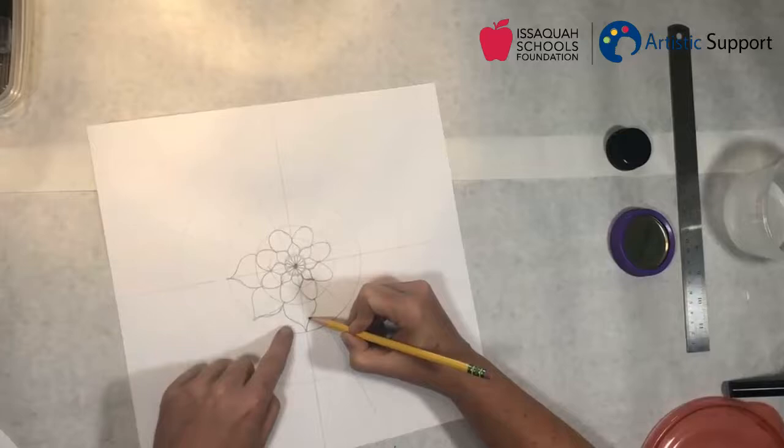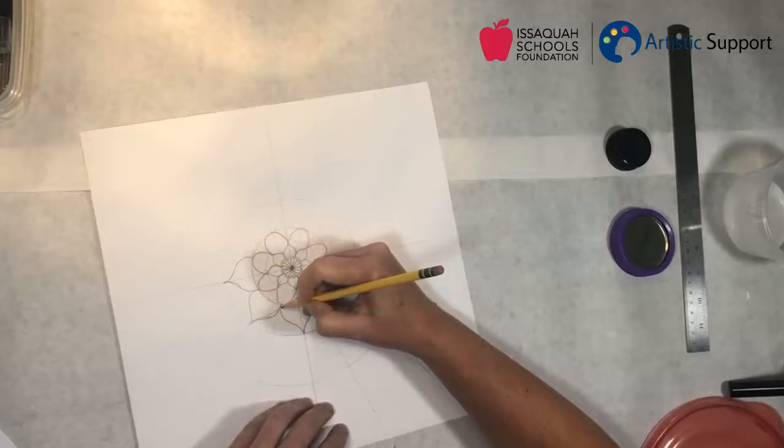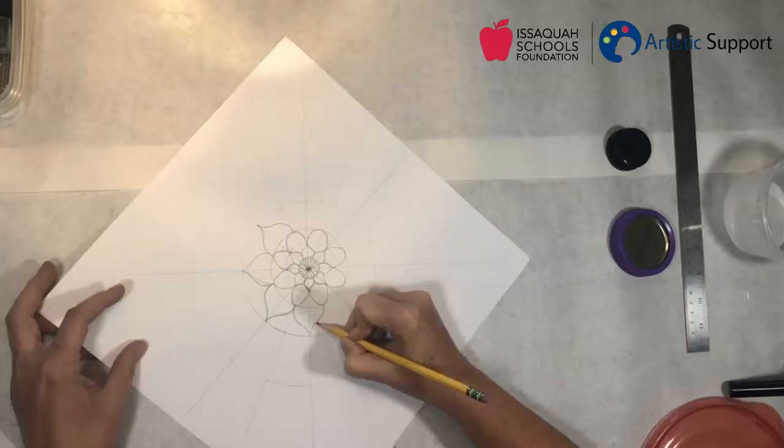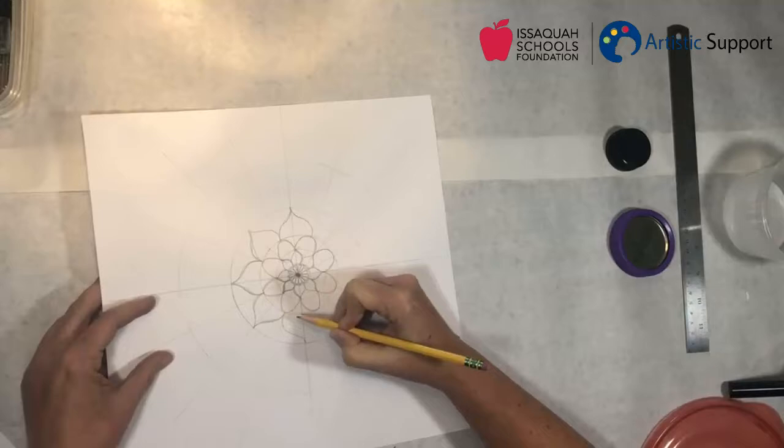So if you're finding yourself judging what you're doing or, oh gosh, see this one's wider than that one and it totally throws everything off, take a deep breath. Remind yourself that this is just about staying in a moment and allowing yourself to relax. The purpose is not to make a perfectly symmetrical repeated piece.